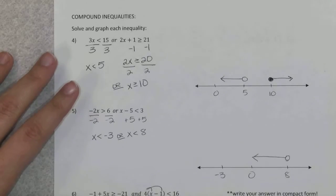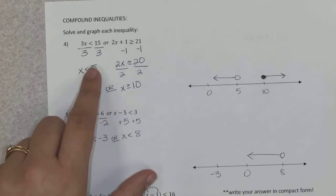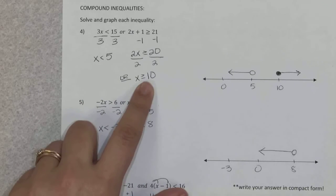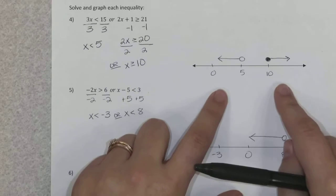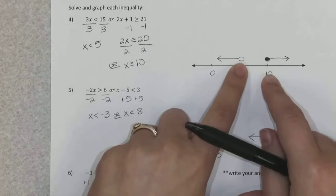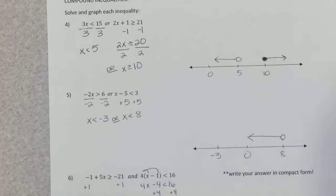So up here in number 4, I got x is less than 5 or x is greater than or equal to 10. So that one follows our pattern here. I have 5 and my 10, open and closed circle, and I'm shading out. Pretty basic.